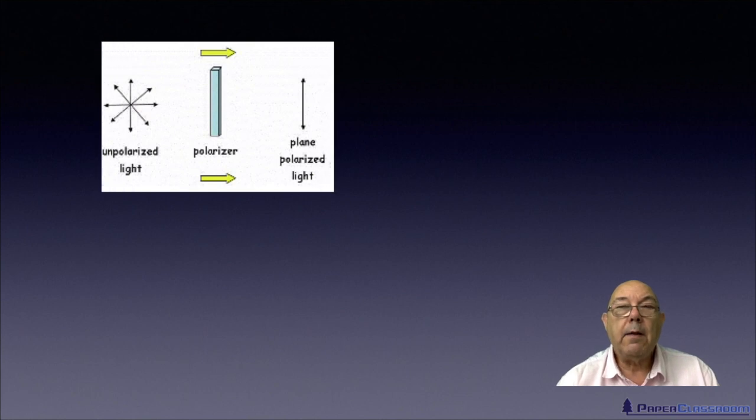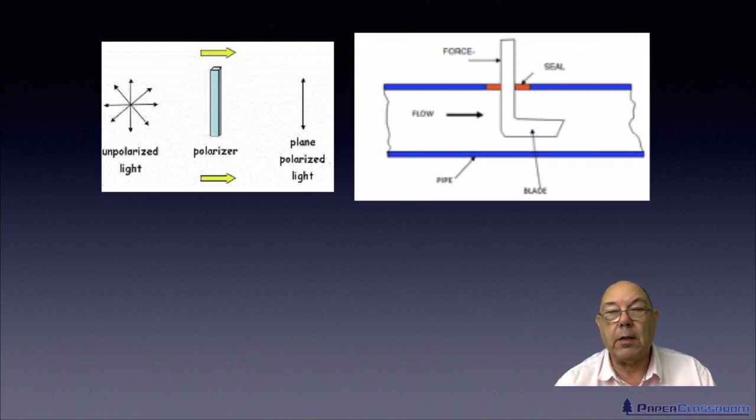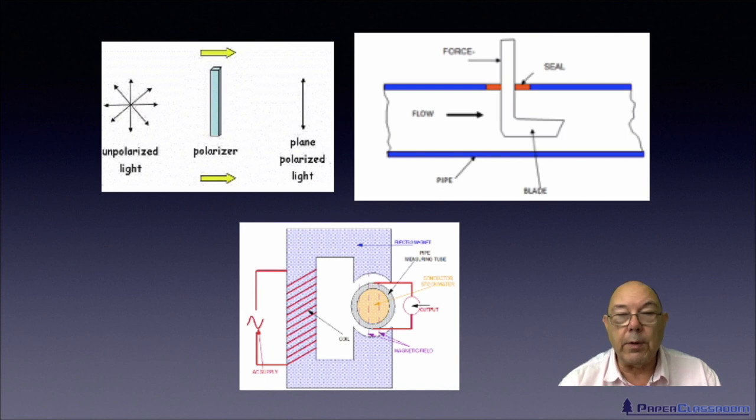And then as we get closer to the machine, we need to be more careful - we need to measure flow and control flow, we need to measure consistency and control consistency. So we'll look at modern forms of consistency measurement like unpolarized light. We'll look at traditional ways of measuring consistency where we use shear forces. And we'll have just a very quick look at how we measure flow rate using a magnetic flow meter.